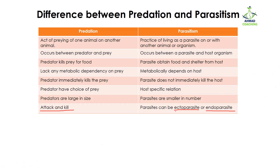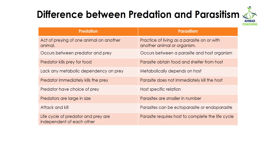In parasitism, parasites can be ectoparasites or endoparasites. Ectoparasites live outside the host body — for example, a leech which attacks from outside. Endoparasites live inside the host body — for example, some kind of virus, protozoa, or other parasite that gains entry inside the human body.